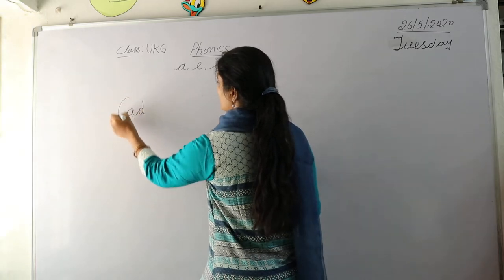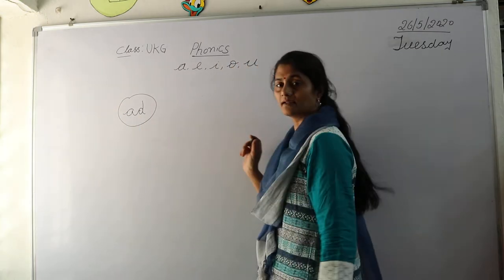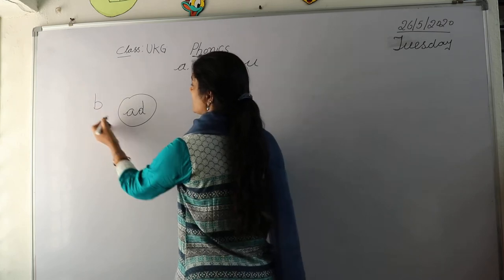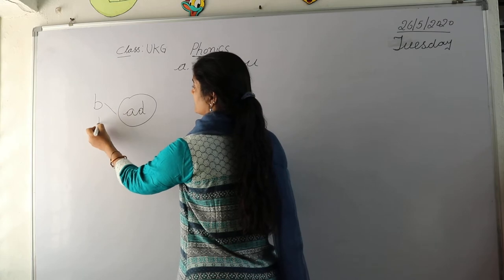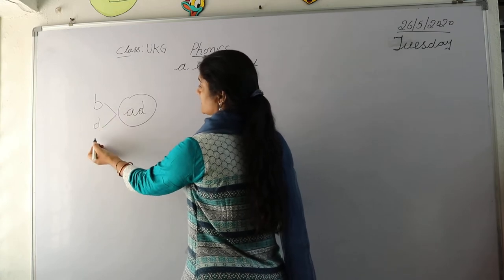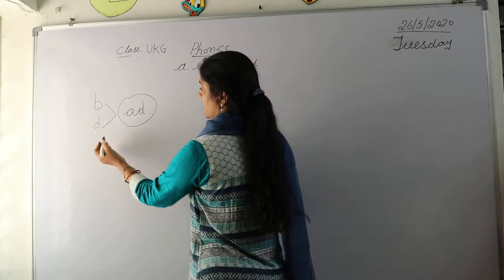A-D makes ad. So when I write B here, it becomes bad. What is the next letter? D. Dad, bad.